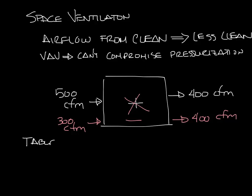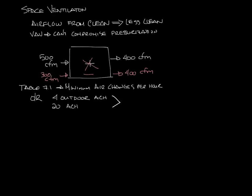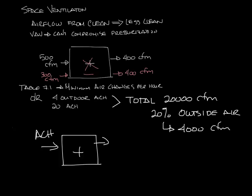Table 7.1 shows the minimum air changes per hour required for a given space based on the type of space it is. For instance, in an operating room you need 4 outdoor air changes per hour and 20 total air changes per hour. This means you have to bring in the equivalent of 4 outdoor air changes as part of those 20 air changes. So if you have 20 air changes equaling 20,000 CFM, you'd set your outside air damper at about 20% to get 4,000 CFM of outdoor air. Also, if a space is supposed to be positively pressurized, the air changes are measured by what's supplied to the space, and if the space is negatively pressurized, it's measured by what is exhausted from the space.